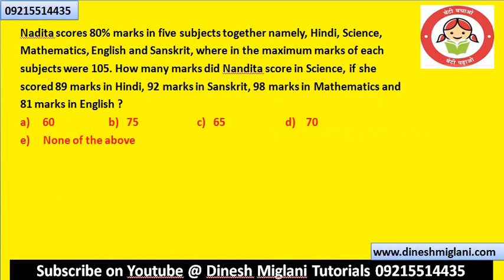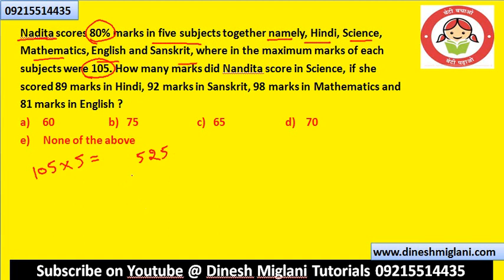Our first question is: Nadita scores 80% marks in five subjects together — Hindi, Science, Mathematics, English and Sanskrit — where the maximum marks of each subject were 105. Total marks would be 525. She got 80% of them, which is 4/5 of 525. So 105 into 4 equals 420. It means she gets a total of 420 marks.